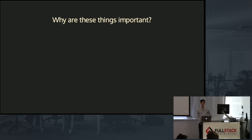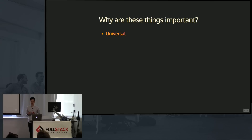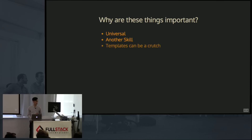First of all, why are these things important to us? We can just get templates, we can have a designer do this for us. The first thing is CSS is universal. We're working with all these different frameworks, mostly JavaScript-based, but the thing about CSS is every browser uses that to style. It's kind of an important thing to know — it's another skill as a developer.